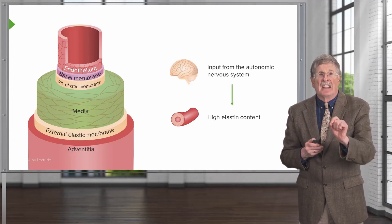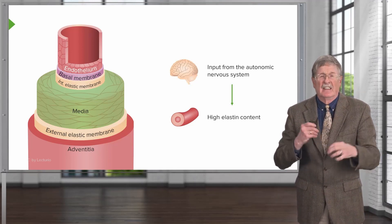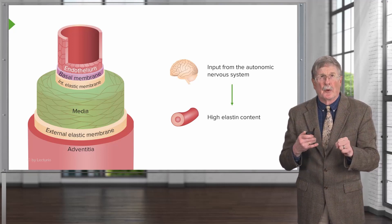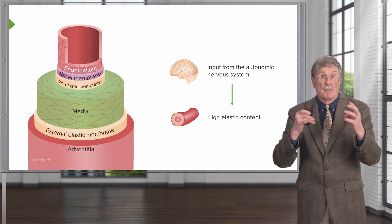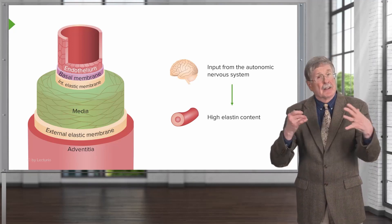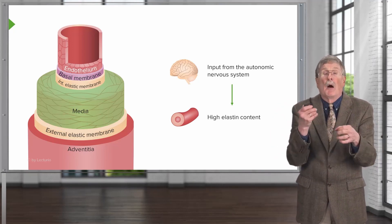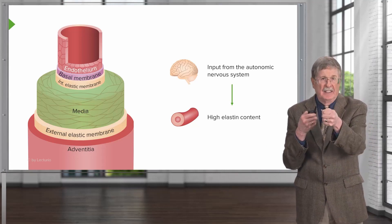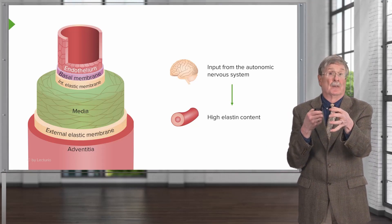There's a lot of input from the autonomic nervous system in the arterial circulation — this is how we control blood pressure. We need to ensure blood gets to every last nook and cranny of the body and regulate, at both a local and systemic level, the tone of the vessels: are they squeezed, giving high tone, or relaxed, giving low tone?